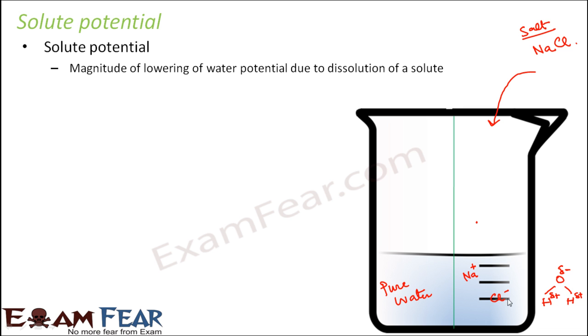Now as soon as these Na plus and Cl minus are present inside the solution, Na plus is surrounded by all the negatively charged oxygen, that is with all the delta minus. So all delta minus will surround Na plus. Similarly, all delta plus, that is all the hydrogens will surround Cl minus.